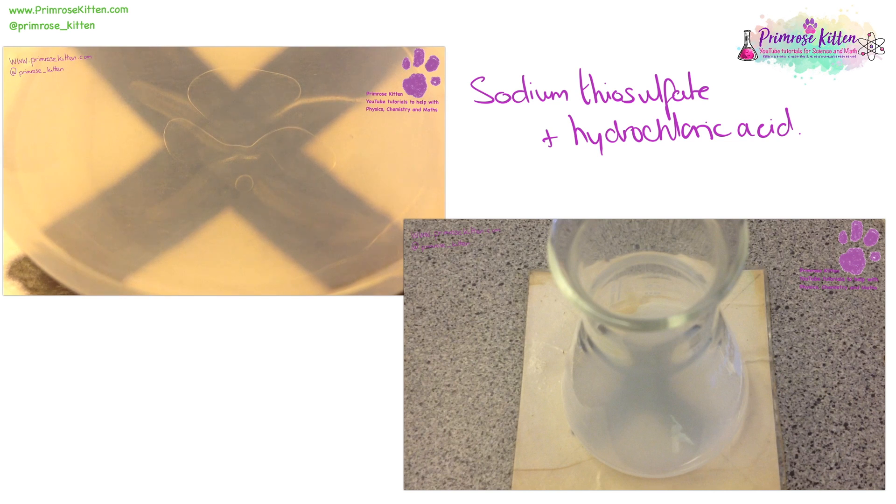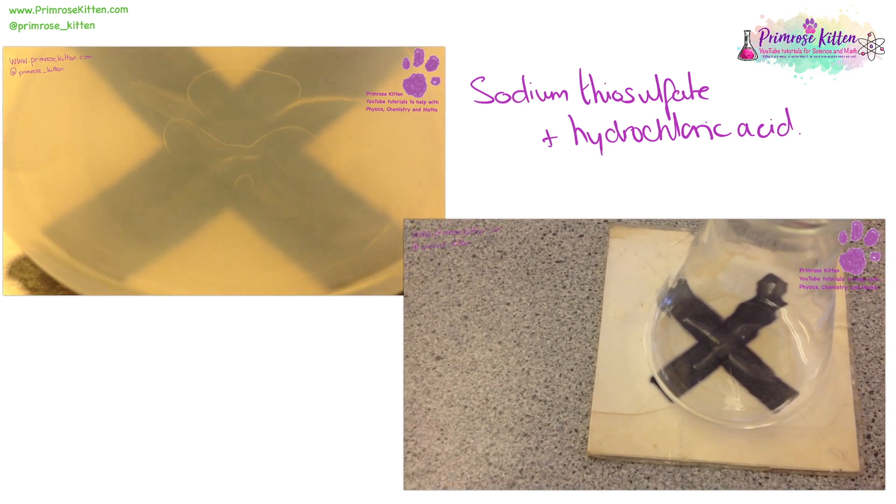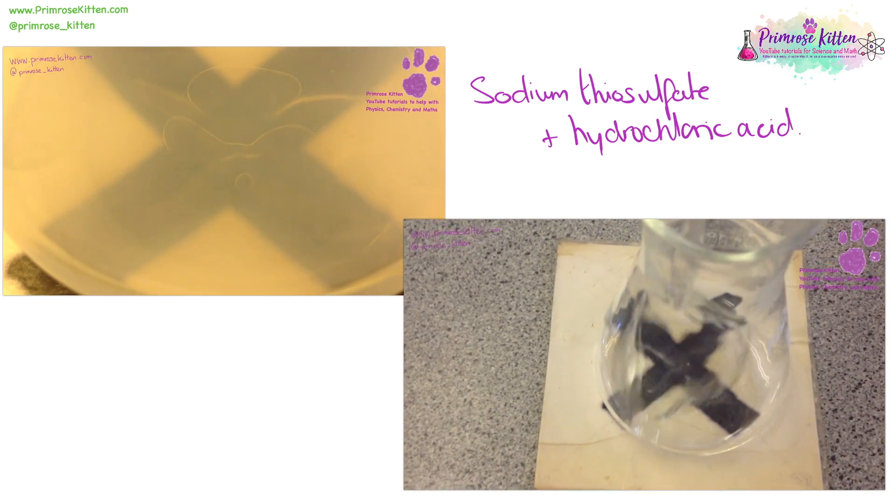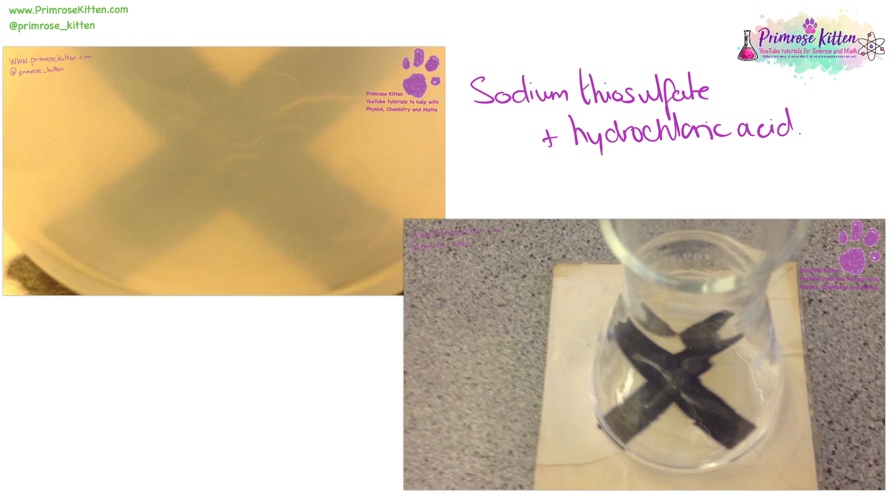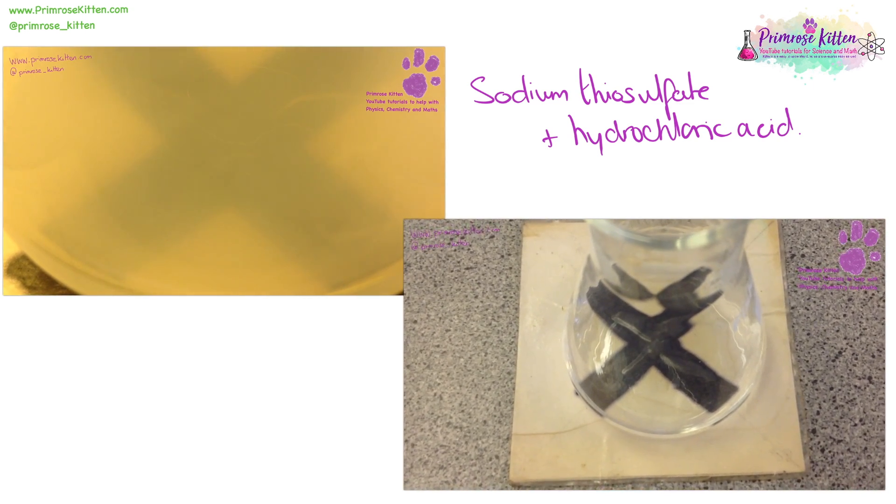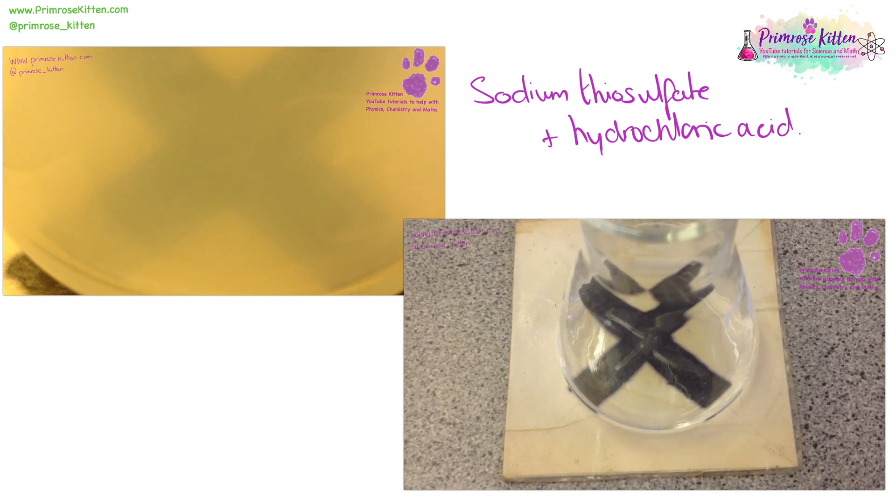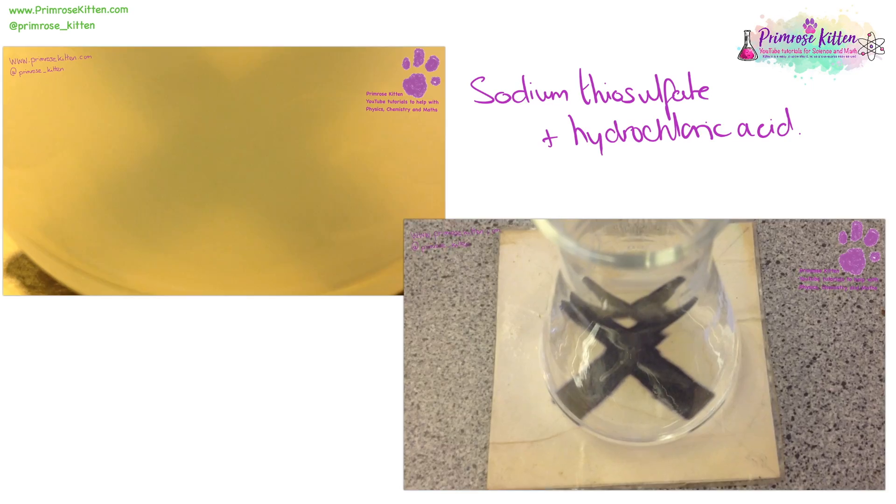You can see, as the reaction is going on, the cross which was visible at the beginning is becoming less and less visible. You need to make sure that the same person always measures the rate of reaction here, so differences in people's eyes don't mean that the differences in the time that the cross disappears affect the results.